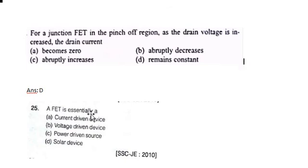FET is essentially a voltage control device. FET is a voltage control device; BJT is a current control device — this is very very important.